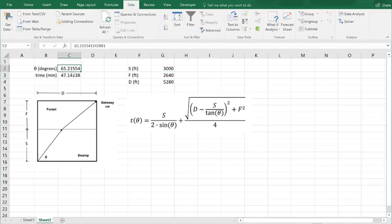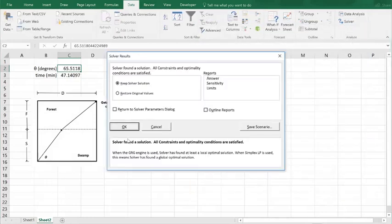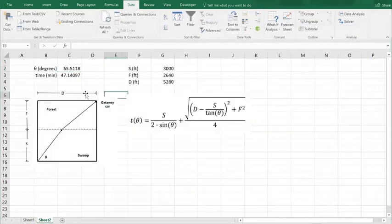In order for us to adjust the angle such that we minimize time we have to go back up here into the solver tool and we have to click solve. So this is not a live solution and to make it a live solution we are going to implement the golden search technique.